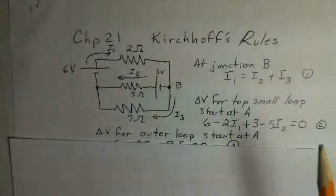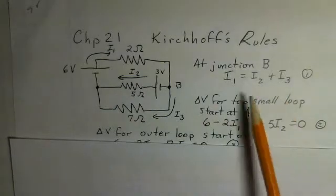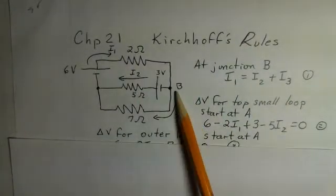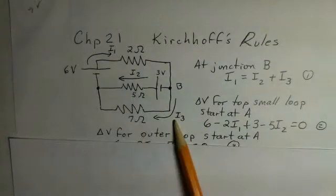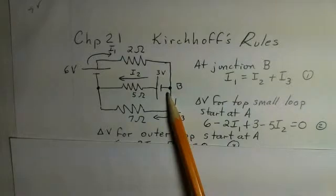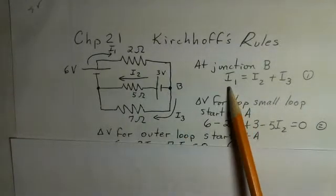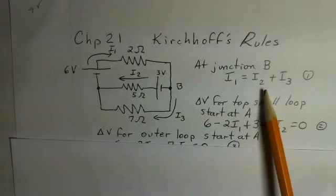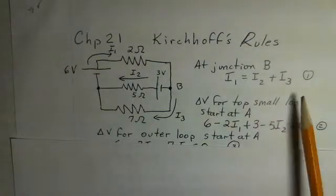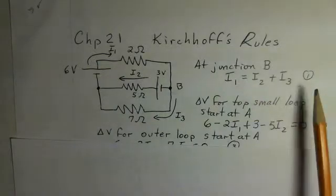The first rule that we'll use is the junction rule. So here at B notice I1 would be coming into that junction. I2 and I3 would be leaving the junction. There's conservation of charge here. There are no electrons being produced at junction B, no electrons being absorbed in the wire. So the current that comes in, I1, has the same size as the currents I2 plus I3. That's Kirchhoff's rule number one, the junction rule.